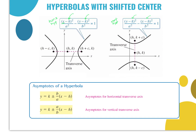The asymptotes for a shifted hyperbola are equations of lines. For a horizontal: y − k = ±(b/a)(x − h). For a vertical: y − k = ±(a/b)(x − h). I think writing it that way is better. Remember your center is at the ordered pair (h, k).